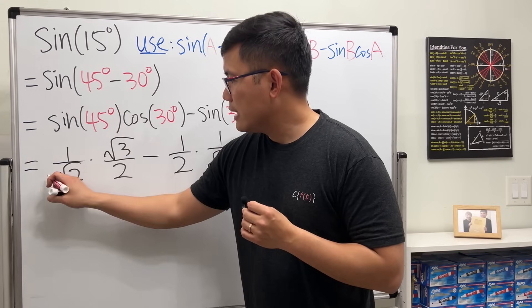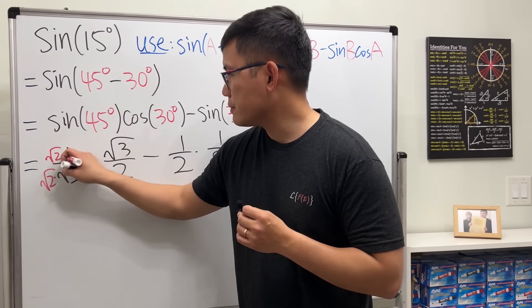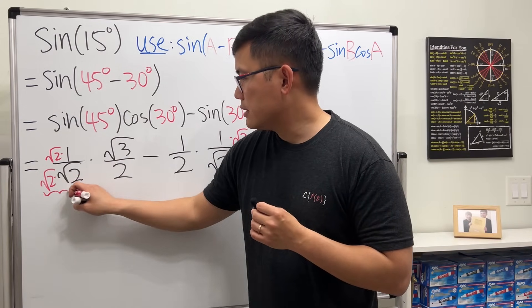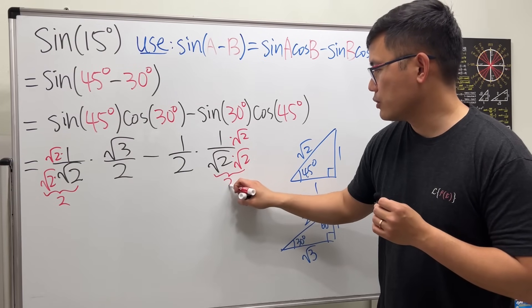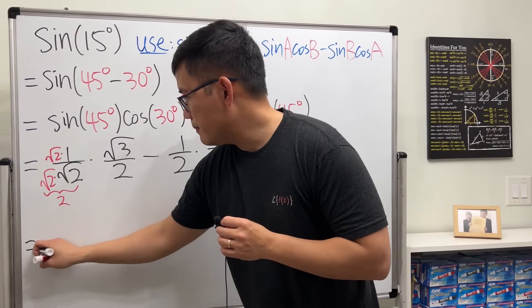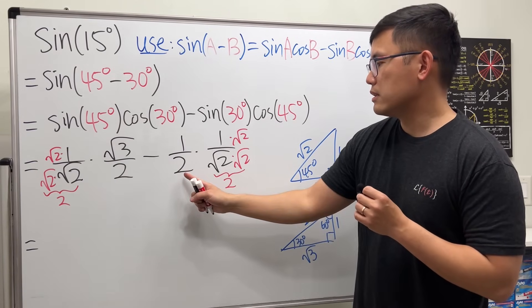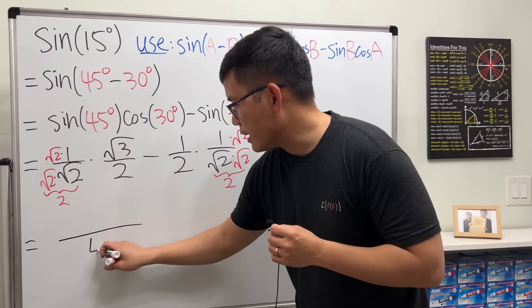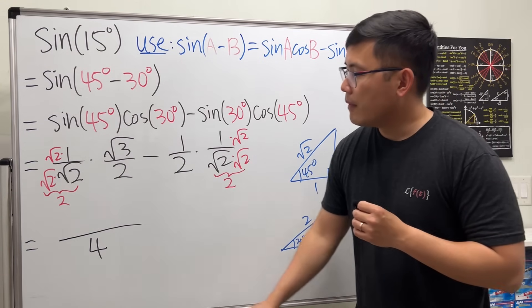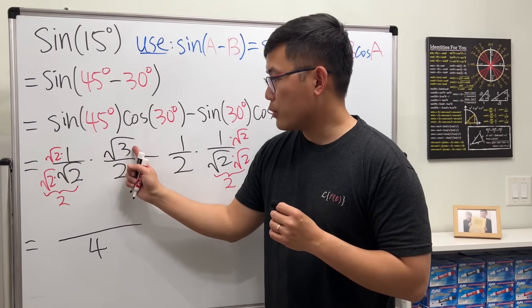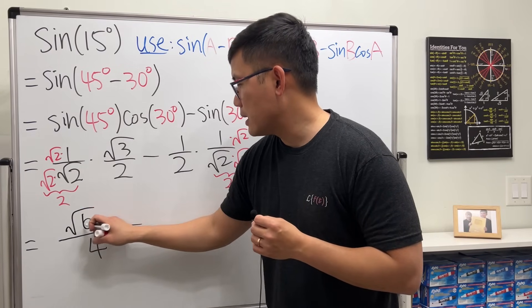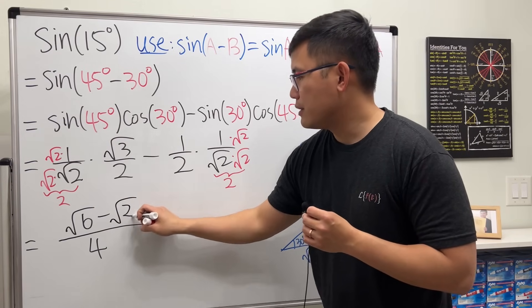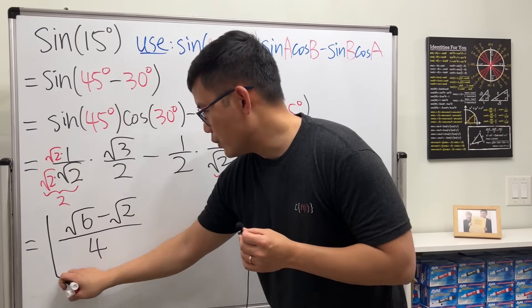Now we can put them together. Let's rationalize the denominator — multiply top and bottom by √2. √2 times √2 is just 2, so the denominator becomes 2×2 = 4. Likewise the other term also gets a 4 on the bottom, so they already share the same denominator. For the first part, √2 times √3 is √6, and the second part gives √2. So the answer is (√6 − √2) / 4. There's not much we can simplify, so we leave it like this.